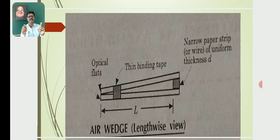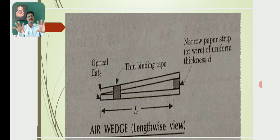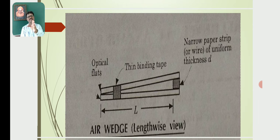Let L be the length of the air wedge. The air wedge consists of two glass plates separated by a thin, narrow paper or wire of uniform thickness. The air film is formed between the upper surface of the lower glass plate and the lower surface of the upper glass plate. The thickness of the air medium increases from left to right.